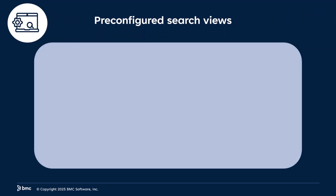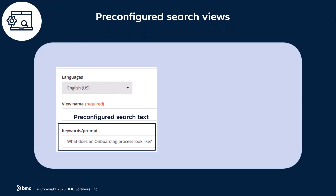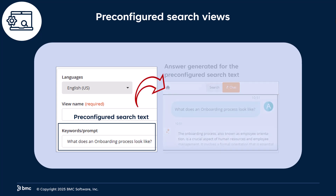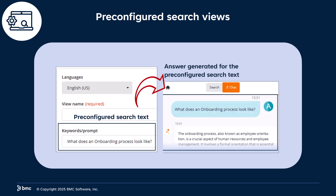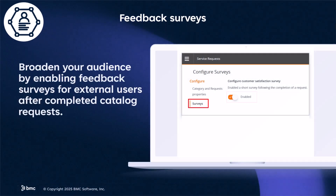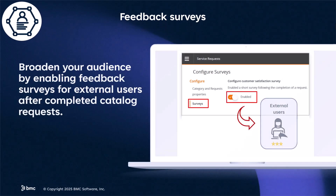Next, we'll look at pre-configured search views. Administrators can create pre-configured search views in BMC Helix Digital Workplace Studio, so that end users instantly see relevant results without having to manually enter common search strings. End users can view the search results from BMC Helix GPT, or keyword search, or both.